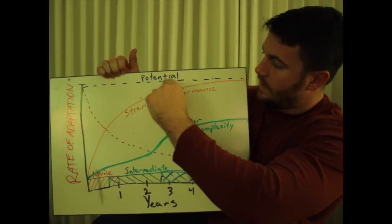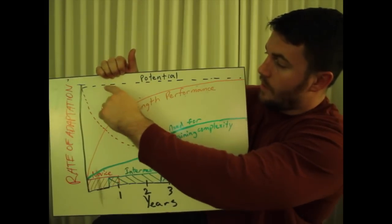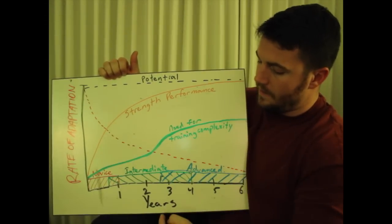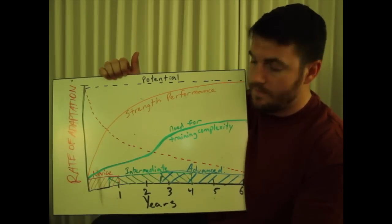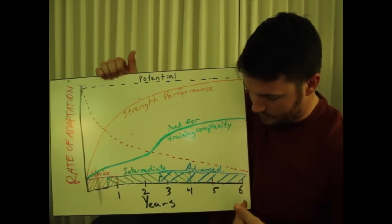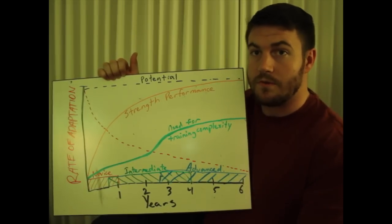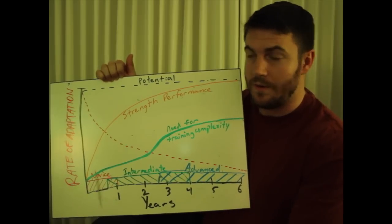This top line here, this black dashed line, represents your potential. The bottom right here is years of training. On this it goes up to year six. Obviously people can train longer than six years but this is what I have on the chart.